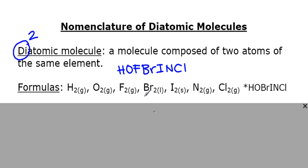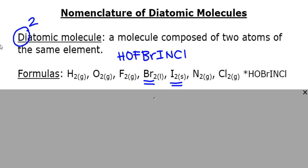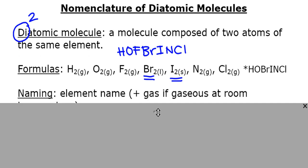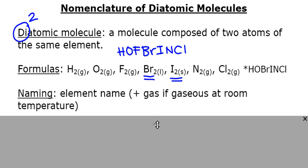Almost all of them are gases, except for two: bromine is a liquid and iodine is a solid at room temperature. If you need to write the formula for any of these elements in a chemical equation, you always put a subscript 2 beside them because two of them always come together — that's their natural state. When naming them, all you have to do is take the name of the element and write it down.